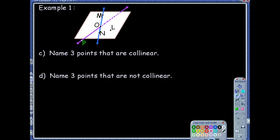Beginning with example one, we want to go ahead and name three points that are collinear. So in this example, Mrs. Palermo, where do you see three points that are collinear? What does that word mean?